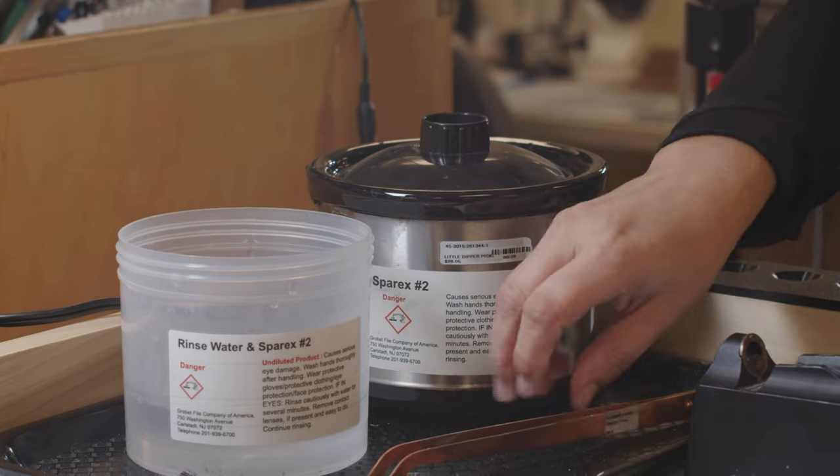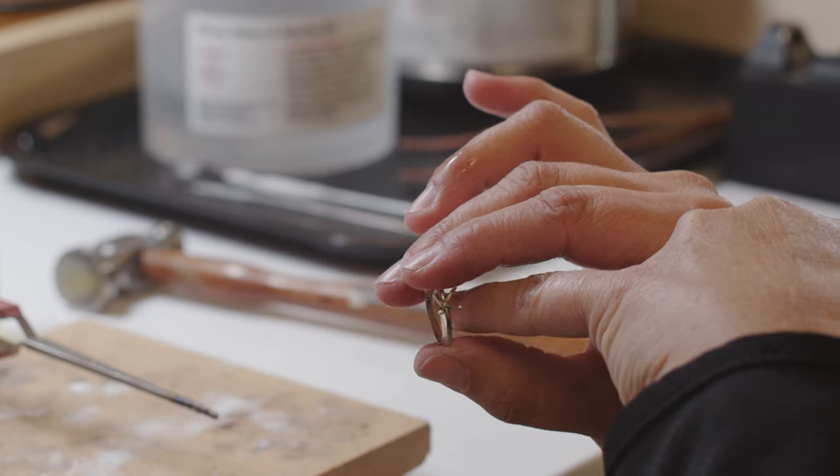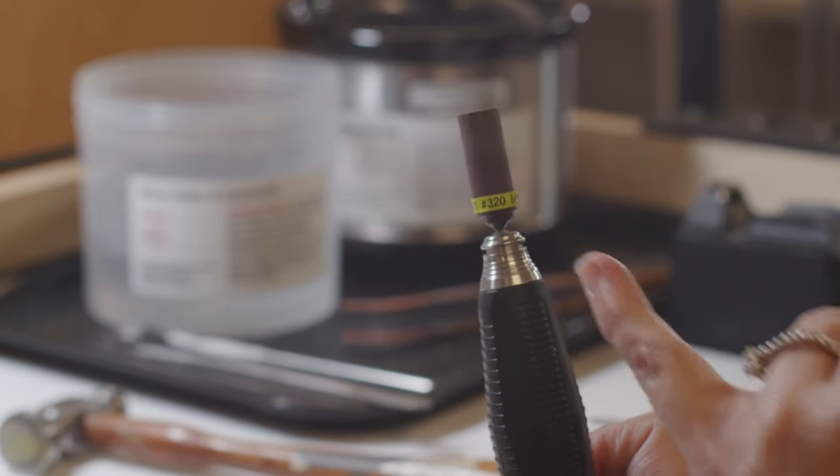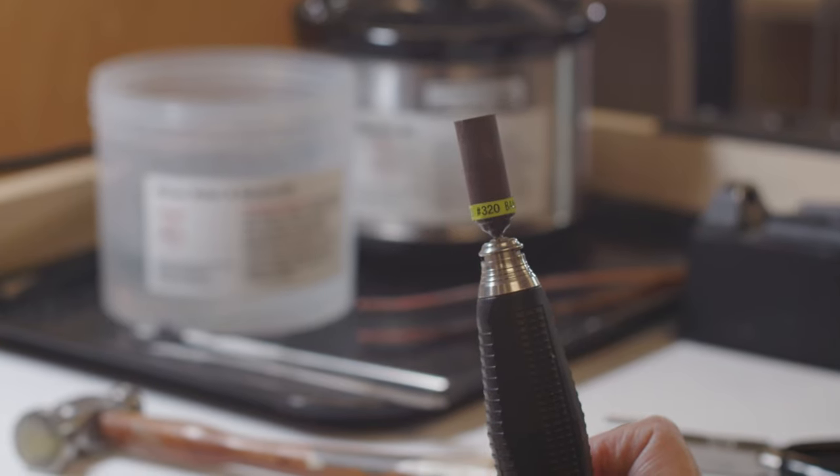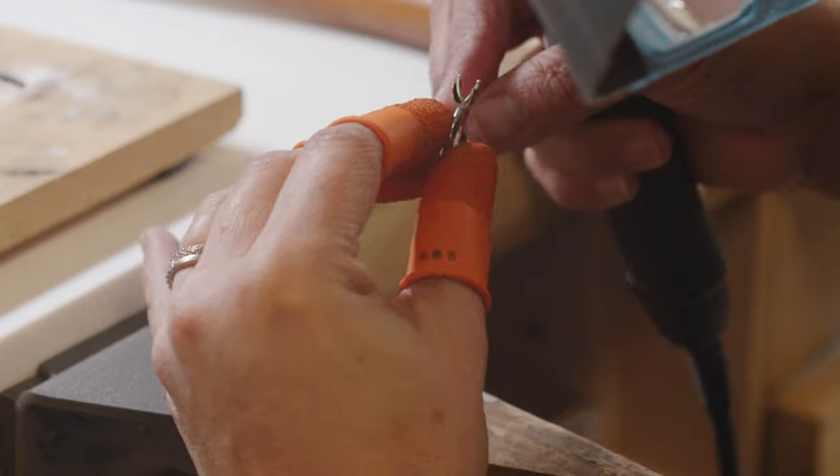I'm going to take it out. We're going to remove the little lump of solder on the inside. Smooth it out with a 320 grit. So I'm smoothing out the inside, the solder on the inside.